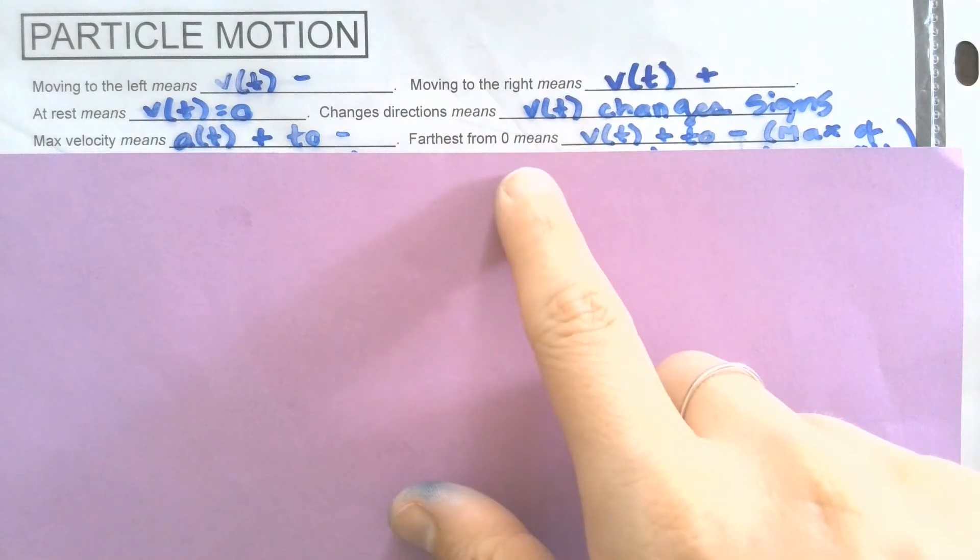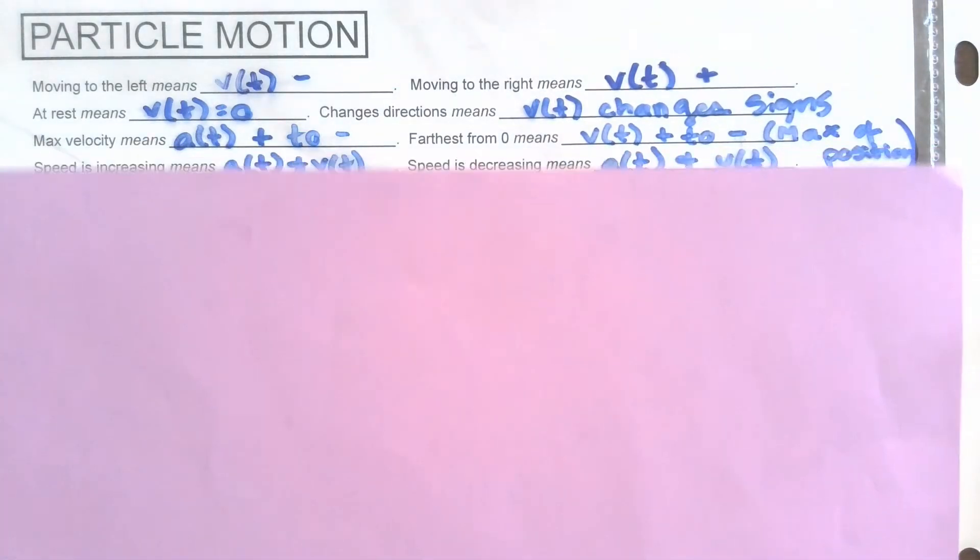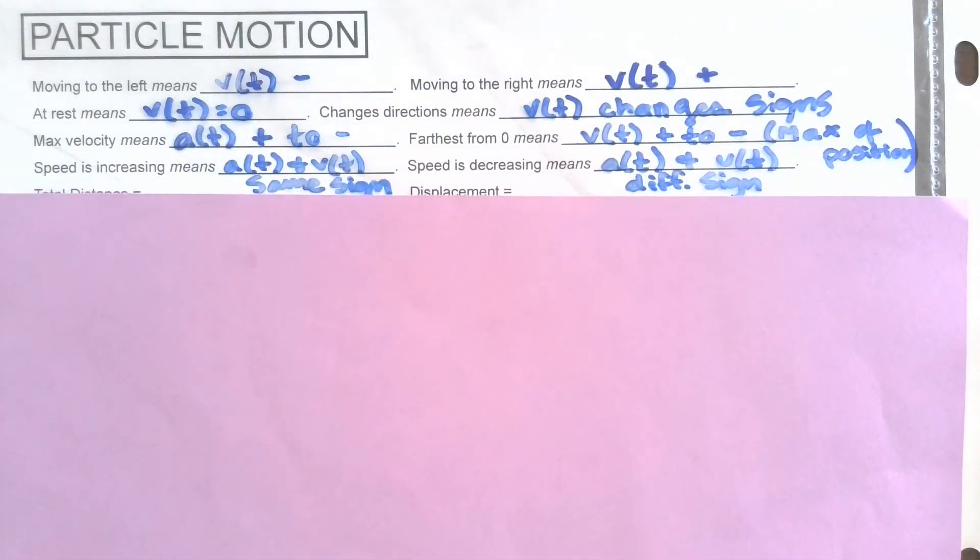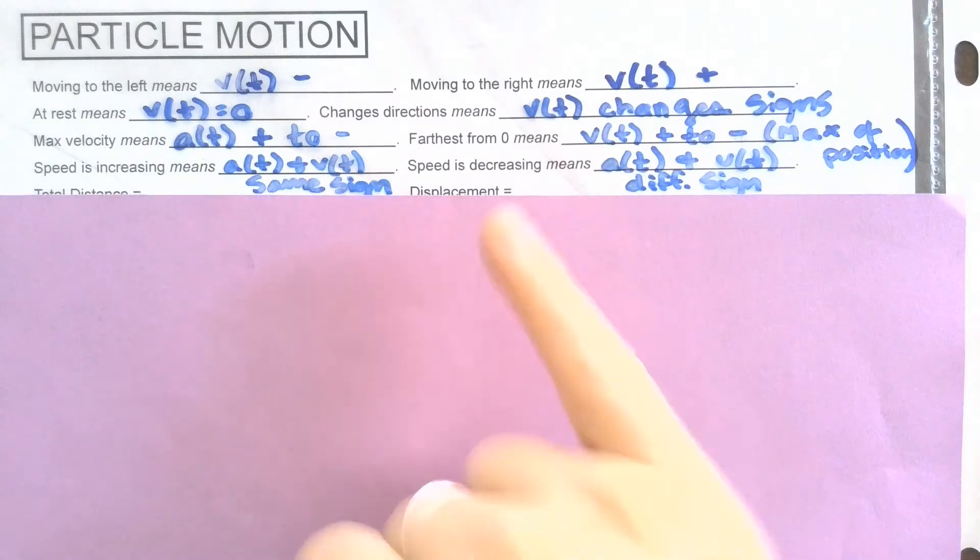Same thing if we're furthest from zero, that means that we have a max for the position, so that means its derivative goes from positive to negative. If we're talking about speed increasing, that means that the acceleration and velocity have the same sign. Where if it's decreasing, acceleration and velocity are going against each other, so they have different signs.